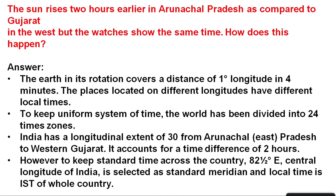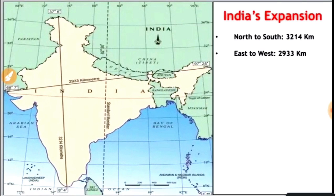There is a two-hour time difference between Gujarat and Arunachal Pradesh, yet watches show the same time. Every one degree equals approximately four minutes. So 30 degrees multiplied by four gives approximately 120 minutes — two hours of time difference. But watches show the same time because India has selected only one line as its standard meridian. That line passes through Mirzapur at 82 degrees 30 minutes east longitude — also called 82.5 degrees east longitude. This standard meridian line is represented as a dotted line at 82 degrees 30 minutes east on the map.